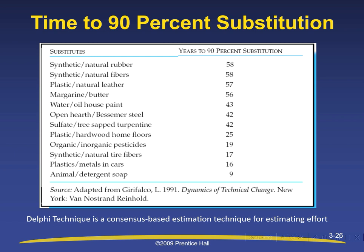Time to 90% substitution: the diagram shows substitutes on the left and years to 90% substitution on the right. For example, synthetic rubber substituted for natural rubber took 58 years to reach 90% substitution, and synthetic fibers substituting for natural fibers also took 58 years to reach 90% substitution, with further examples shown in the diagram.